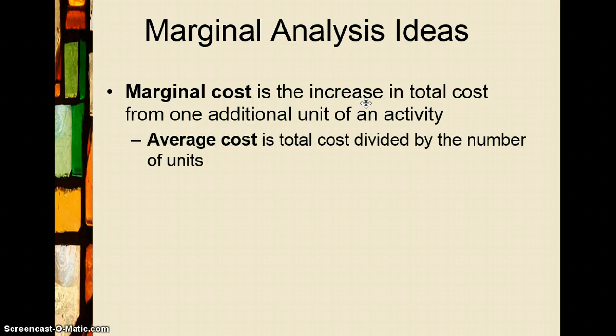Comparing that to average cost: average cost is the total cost divided by the number of units. In that previous example, if I bought three bottles of water at one dollar each, the total cost would be three dollars, and three dollars divided by three bottles gives an average cost of one dollar per bottle.